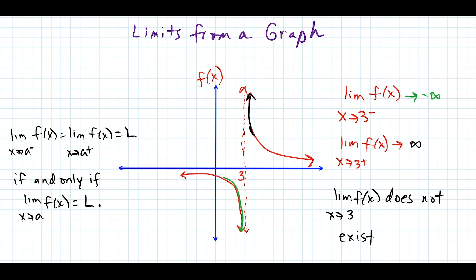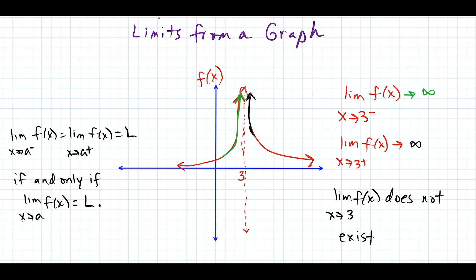One other case with the vertical asymptote is when either side of the graph is heading to the same place. Let's say this time the graph goes up on both sides. Now the limit as x approaches 3 on the left side is also heading up to positive infinity, so that limit changes to positive infinity. The limit as x approaches 3 in general is heading towards positive infinity. Technically this limit does not exist because infinity is not a number — it's a direction. But for some calculus classes, they'll be more interested in saying which direction the graph is headed.